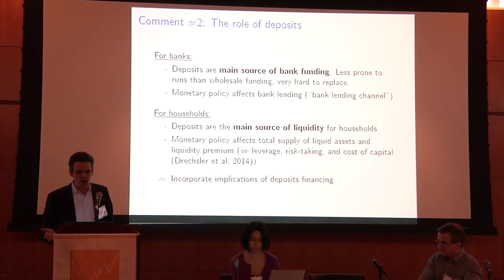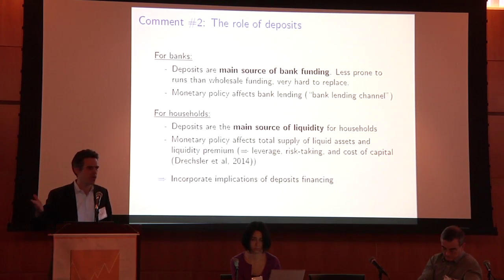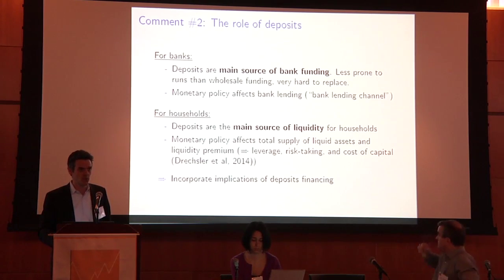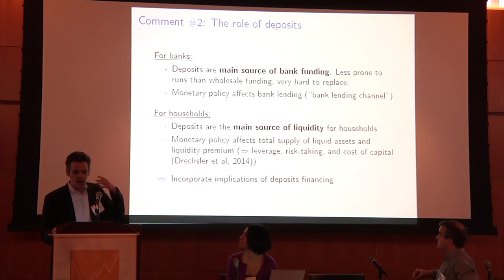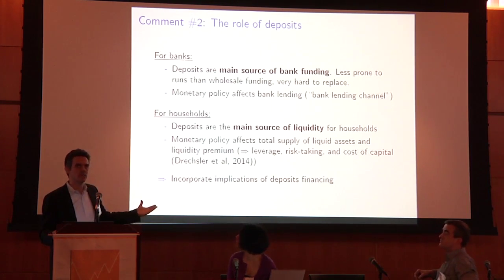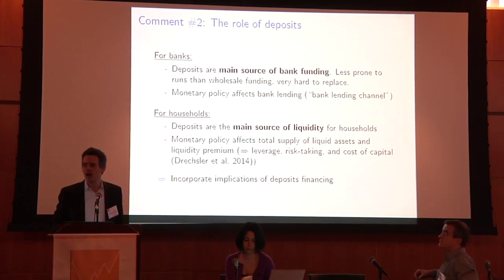It's also important for households. Deposits are arguably the main source of liquidity for households. If there's a large change in the supply of liquid assets to households, it affects the pricing of liquid assets. We do see that the liquidity premium — measurable by looking at Fed funds versus T-bills — highly correlates with the Fed funds rate. So potentially deposits are affecting the quantity of liquid assets, which in turn can affect how much leverage banks take on and the cost of capital, particularly if banks must hold liquidity to insure themselves against funding shocks. My comment is: I completely agree with putting deposits in the model, but I want to make them even more special and see how that affects real outcomes.